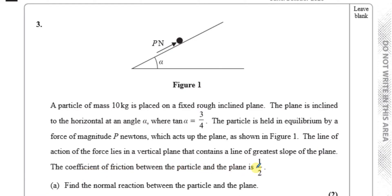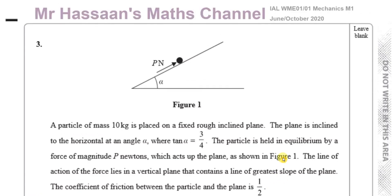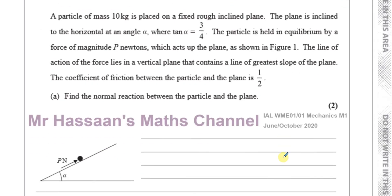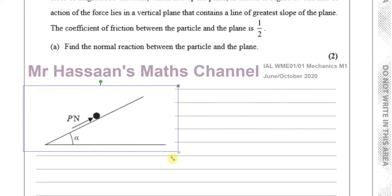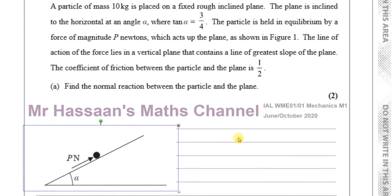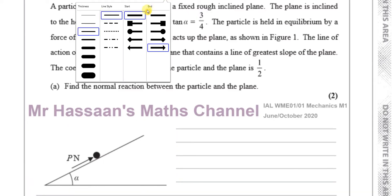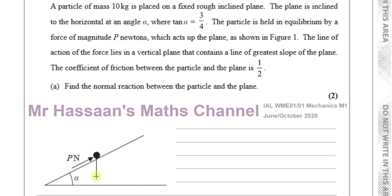Find the normal reaction between the particle and the plane. I'm going to draw the diagram down here because I can show more working more easily. I've taken a copy of that diagram and made it slightly bigger. So what I'm going to show here is the forces acting on this particle. The forces acting on this particle: you have its weight, which acts vertically down.